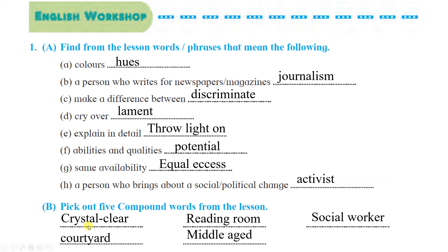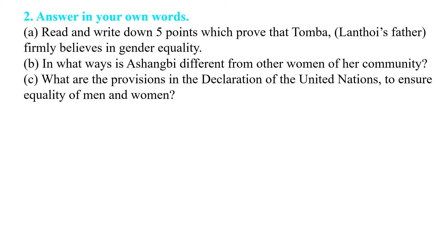Now pick out 5 compound words from the lesson. Compound words are words made with the combination of 2 words. By combining, they give a new third word with a different meaning, and if you separate them again, they are different things with different meanings. Examples: crystal clear, reading room, social worker, courtyard, middle aged.